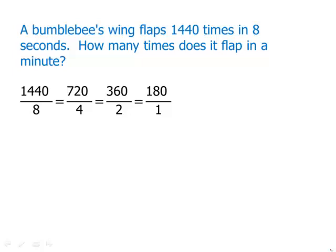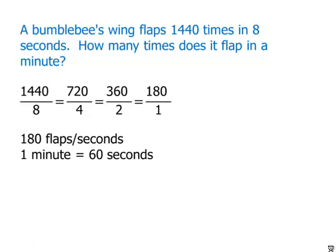Well, we want the flaps in a minute. So clearly, what we're going to have to do is multiply by 60 seconds. Because there are 60 seconds in a minute. So the total number of flaps is going to be 180 times 60. We don't actually need a calculator for this. Let's think about this.